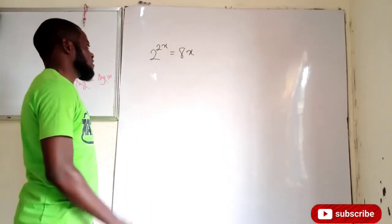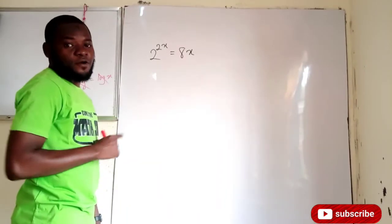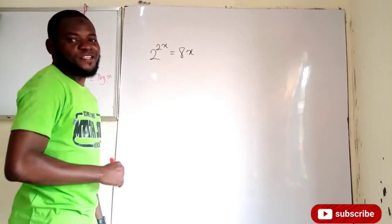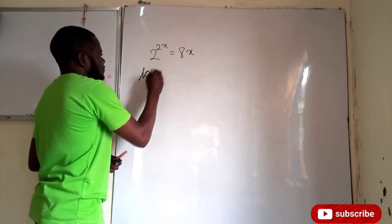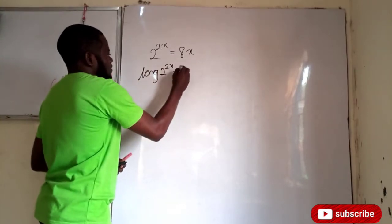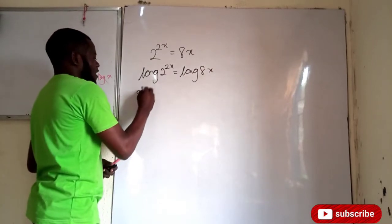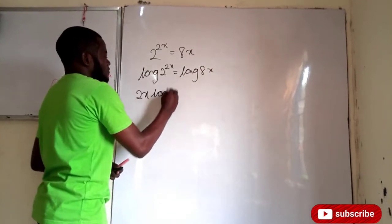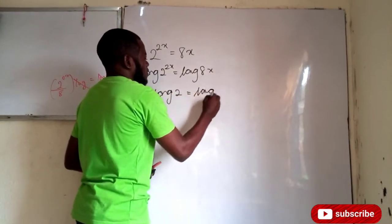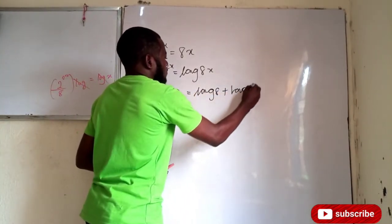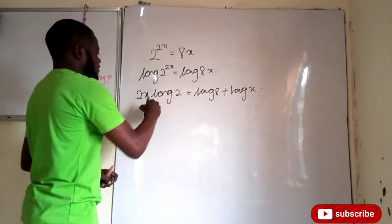This is very difficult to achieve. What if you can spot the error in this place — let me know in the comment below. If I take the log of both sides: log of 2 to the power of 2x equals log of 8x, so 2x log of 2 will equal log of 8 plus log of x.